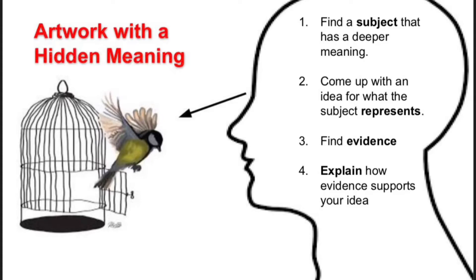For example, the cage. Once you've found your evidence, you have to explain how your evidence supports your theory. For example, the cage supports the idea that the bird represents freedom because cages keep people in and keep them from being able to make their own choices or go where they want to go.